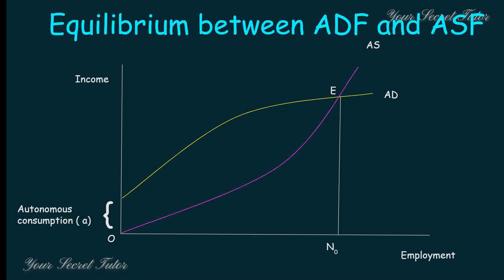According to Keynes' Theory of Employment, in a capitalist economy there is no full employment. The equilibrium is determined by effective demand. If we look at the AS curve, at a certain level of employment there is a gap between supply and demand.